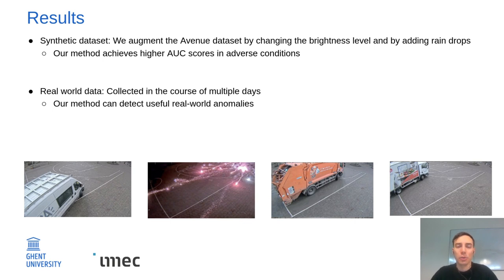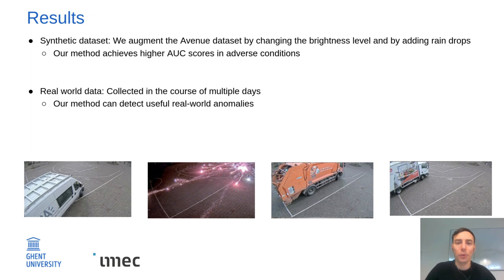We evaluated this on two datasets. First, a synthetic dataset — the Avenue dataset commonly used for video anomaly detection — which we augmented by adding rain and changing the brightness. This allows us to quantitatively compare our approach to others on adverse weather conditions, and our method achieves a higher area under the curve. Please refer to the paper for the exact values.